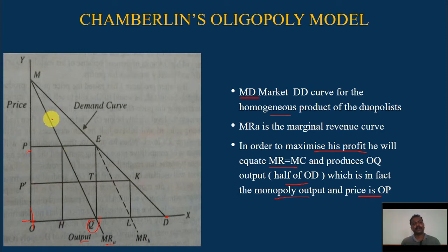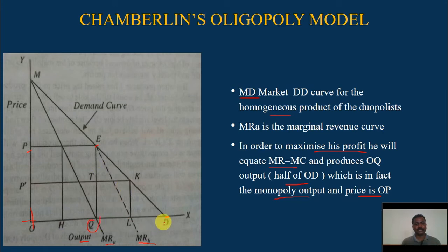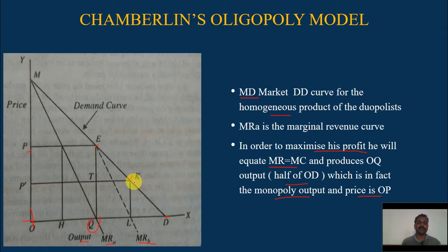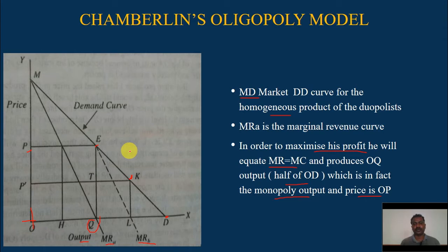As firm B enters, the remaining segment ED of the demand curve is available to firm B, and MRB is its marginal revenue curve. The total market available to firm B is QD. Out of that, they produce half — that is QL of output — and fix the price LK. This is the Cournot solution, which we discussed in the previous model.